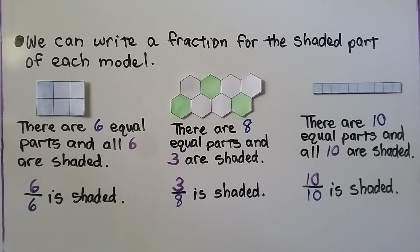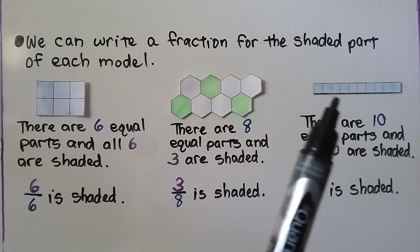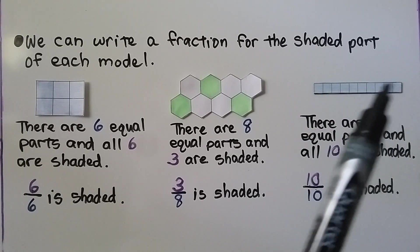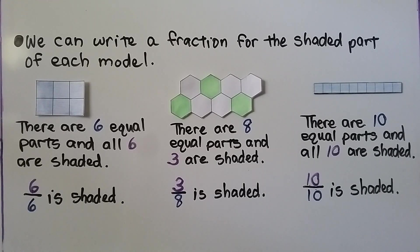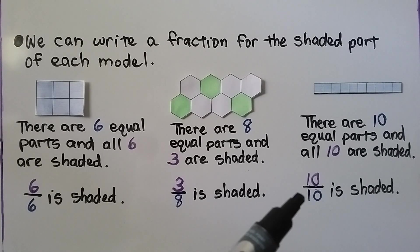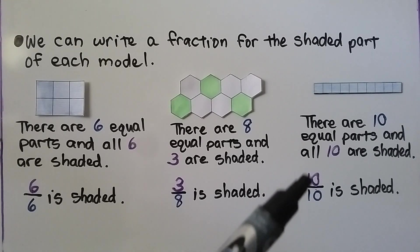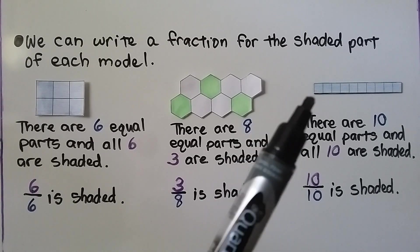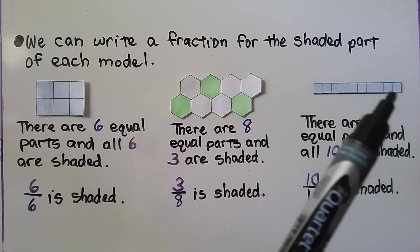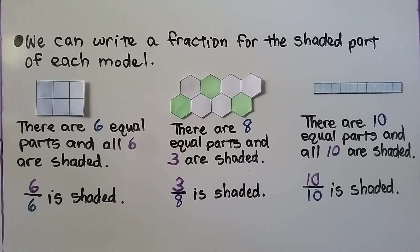Here there are eight equal parts and three are shaded green — three-eighths is shaded. Here we have a strip with ten equal parts and all ten are shaded. Ten of the ten parts are shaded — ten-tenths is shaded. Same numerator and denominator, it's equal to one. We have the entire one whole thing shaded.